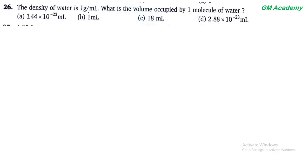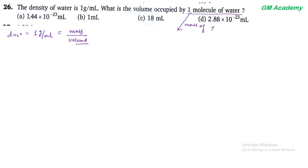Next question 26. The density of water is 1 gram per ml. What is the volume occupied by 1 molecule of water? सबसे पहले 1 molecule of water का mass calculate करते हैं। Mass of 1 H₂O molecule = 18 atomic mass units। इसको gram में convert करना है।